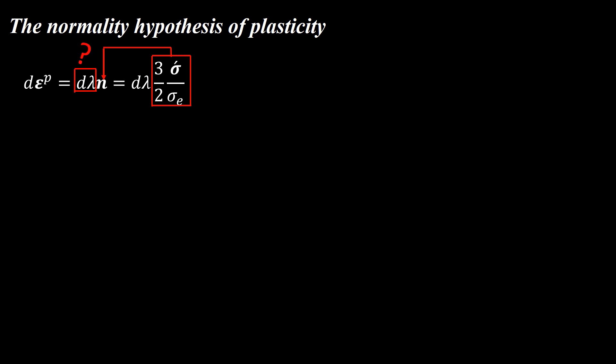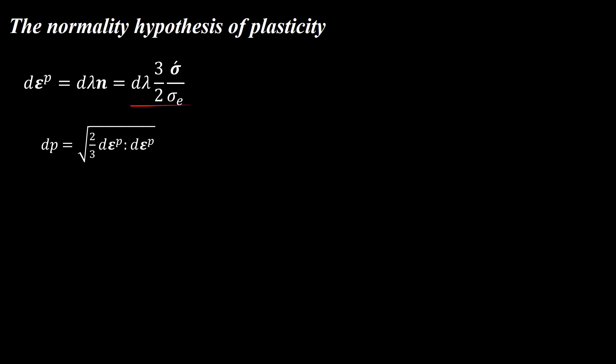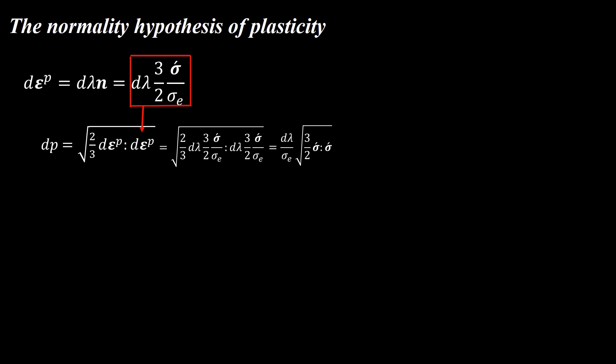Now we find the scalar coefficient d-lambda. Starting from the effective plastic strain increment formula and replacing the plastic strain increment with the normality relationship, a simple manipulation shows that the effective plastic strain increment equals d-lambda. The plastic strain increment can then be written explicitly, and the remaining task is to calculate the value of dp, which is determined by the consistency condition.